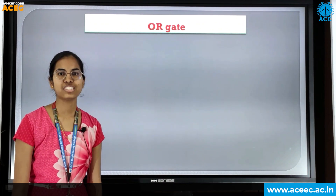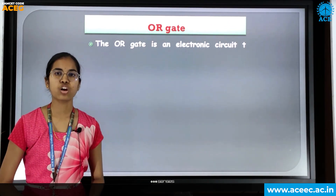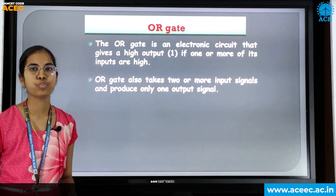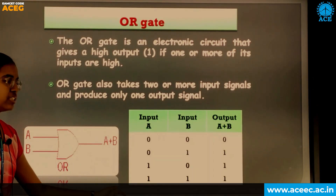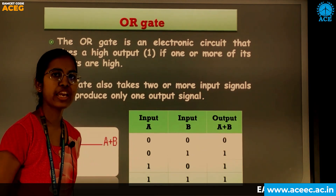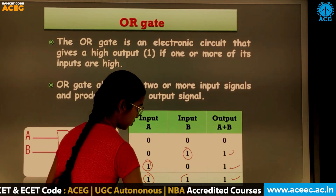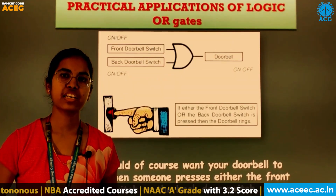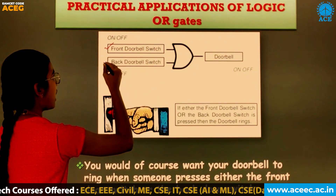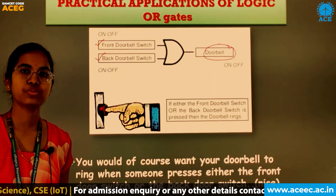Hello everyone, I am Shivani from 3rd year CSCB. Today I am going to explain about the OR gate. The OR gate performs logical addition. It is an electronic circuit that gives high output when one or more inputs are high. The OR gate also takes two or more inputs and gives a single output. This is the symbol of the OR gate. This is the truth table for the OR gate. Here A and B are inputs and A plus B is the output. In the OR gate, the output is high when one or more inputs are high. The practical application of the logic OR gate is a doorbell switch. The front doorbell is one input and the back doorbell is another input, and the doorbell ring is the output. If either the front doorbell switch or the back doorbell switch is pressed, the doorbell rings.